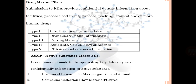In the DMF types: Type 1 covers site, facilities, operation, and personnel. Type 2 covers drug substance and intermediates. Type 3 covers packaging material. Type 4 covers color, flavor, and essence. Type 5 covers FDA-accepted reference information.